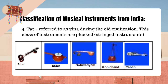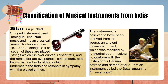4. Tat, referred to as Veena during old civilization: instruments in this class are plucked stringed instruments. Sitar is a plucked stringed instrument used mainly in Hindustani music and Indian classical music. A sitar can have 18, 19 or 20 strings — six or seven are played strings which run over curved raised frets, and the remainder are sympathetic strings (Tarb, also known as Taraf or Tarafdar), which run underneath the frets and resonate in sympathy with the played strings. The instrument is believed to have been derived from the Veena, an ancient Indian instrument, modified by a Mughal court musician and named after a Persian instrument called the Setar, meaning three strings.